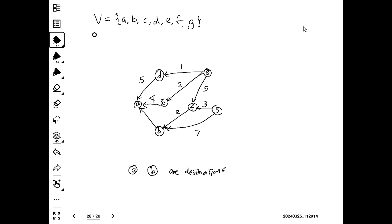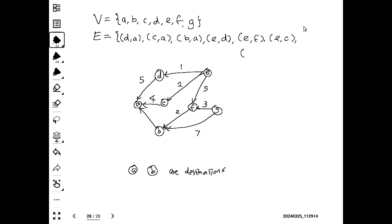We also have a set of edges. The way we represent edges is as a two-tuple: each two-tuple represents a single edge. The first item is where we are going from, the second is where we are going to. So we have edges: D-A, C-A, B-A, E-D, E-F, E-C, F-B, G-F, and G-B.